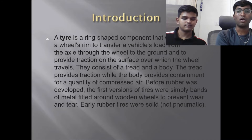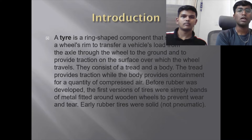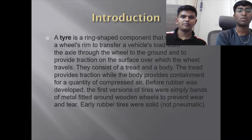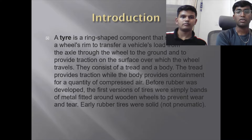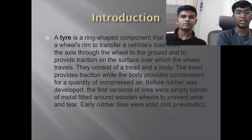A tyre is a ring-shaped component that surrounds a wheel and transfers force from the vehicle to the ground, providing traction on the surface. They consist of a tread and a body — the tread provides traction while the body provides containment for compressed air. Before rubber was developed, early tyres were solid.